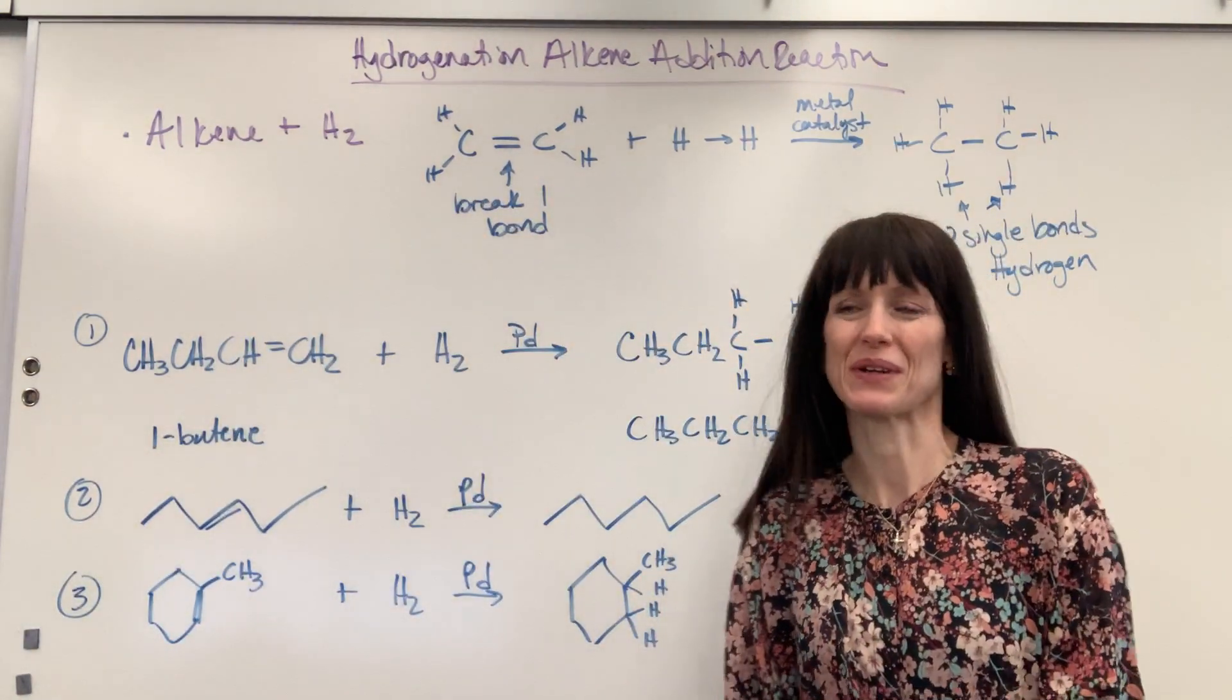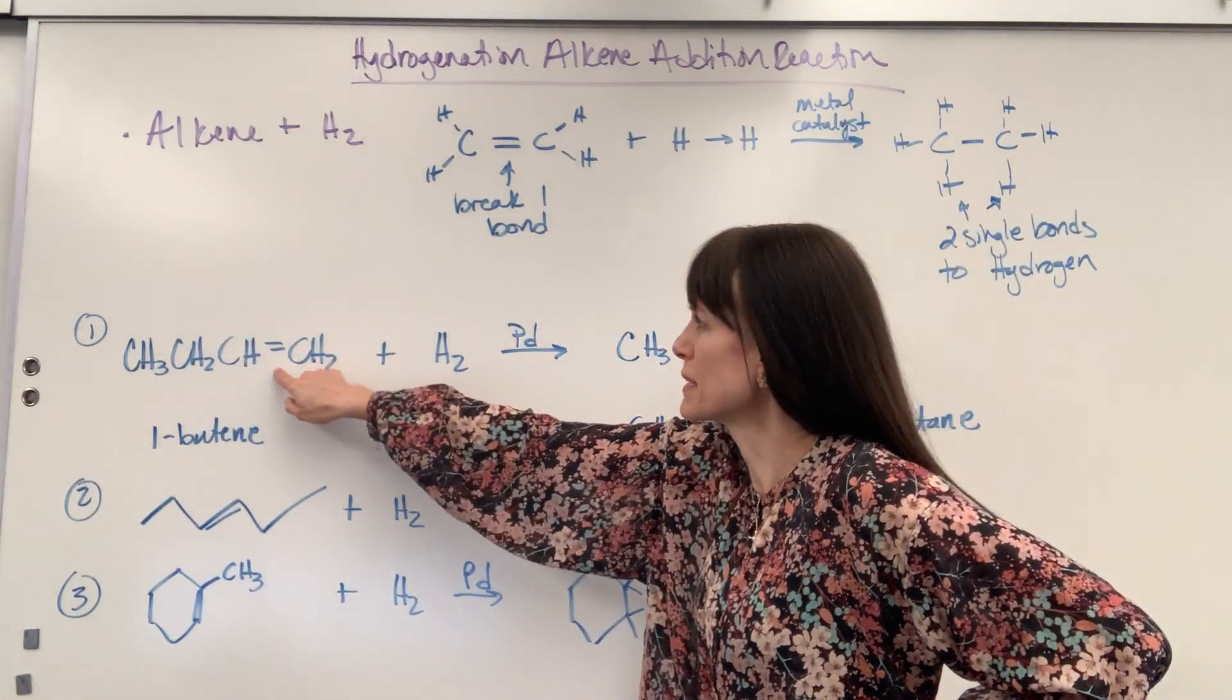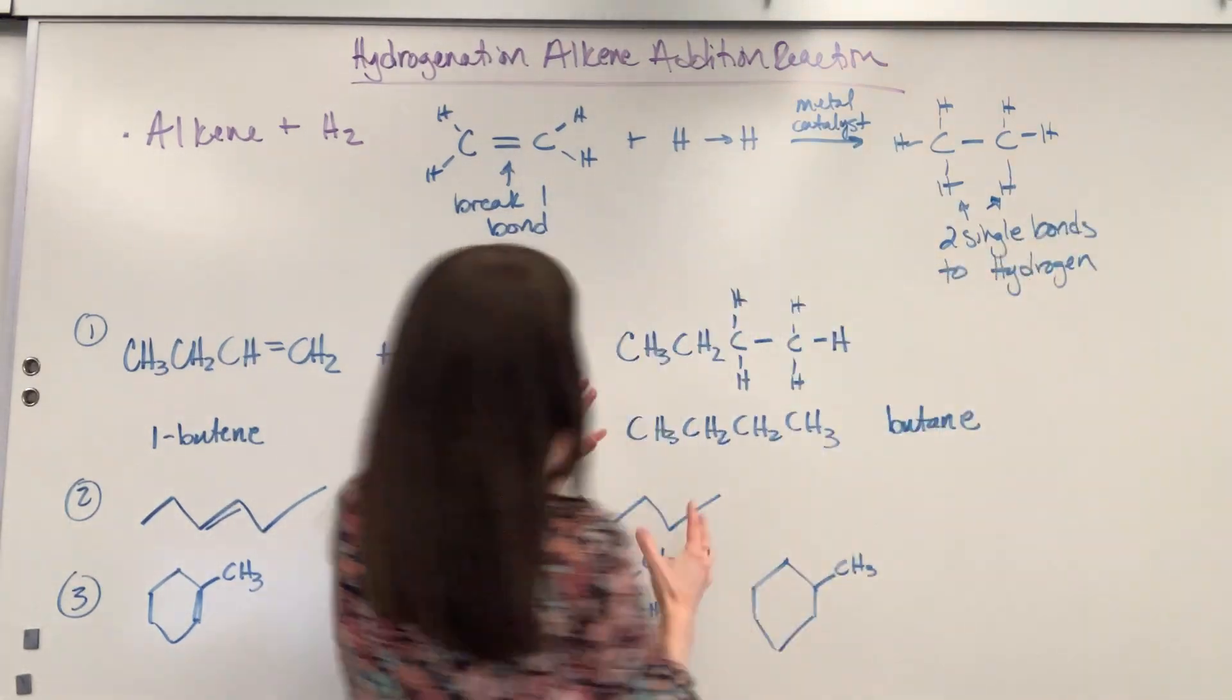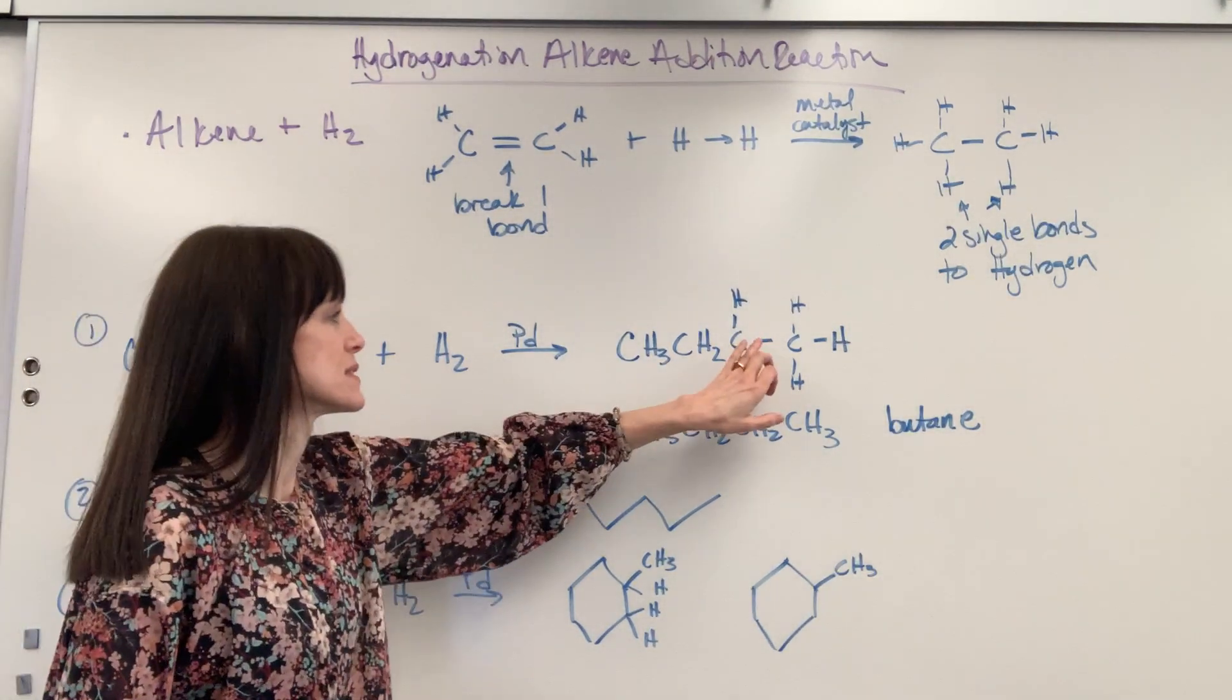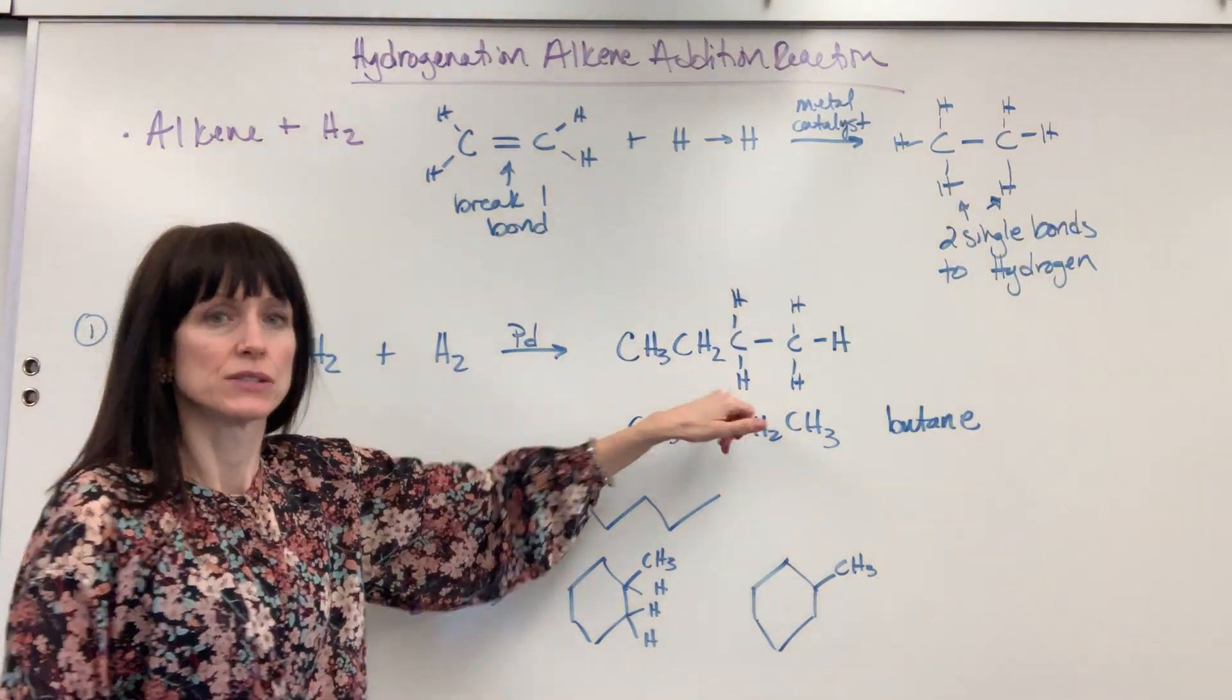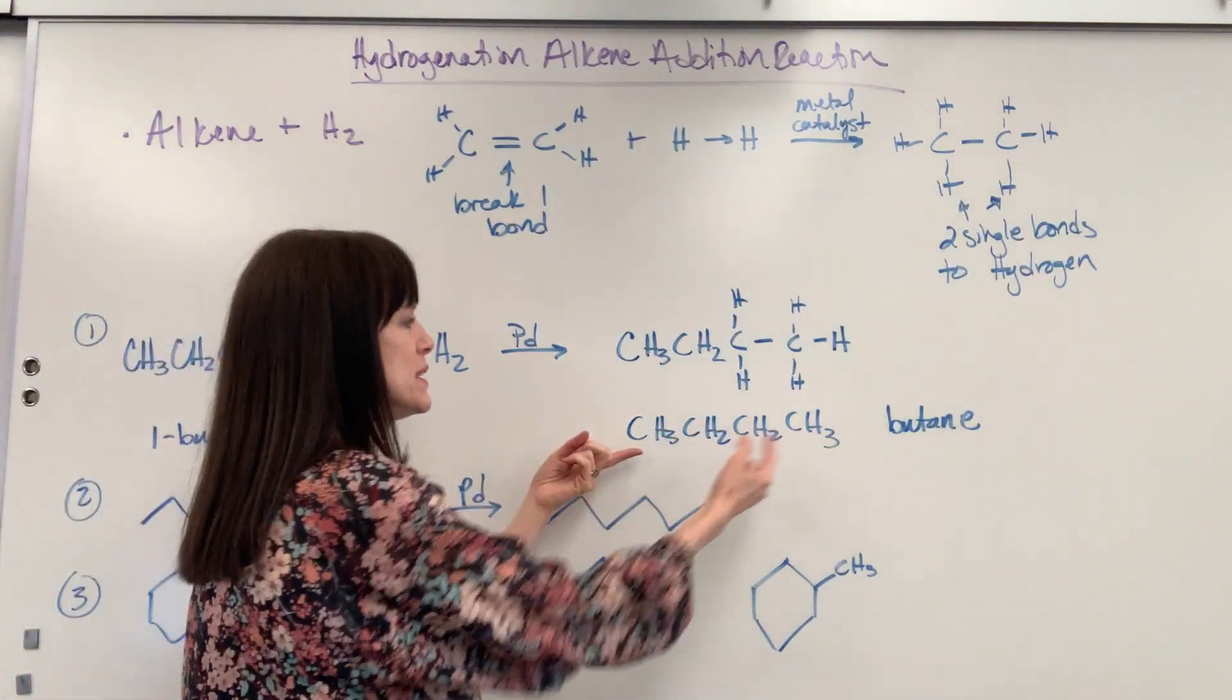I have three examples for you. Let's first begin with a 1-butene. So there's my double bond, we add the hydrogen, I've got my metal catalyst. And now, so I broke it out so you can see it explicitly, that double bond, that second bond breaks, becomes a single bond, and the two hydrogens are now added.